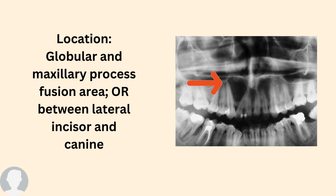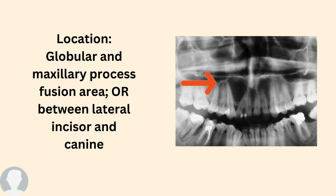From the name globulomaxillary — maxillary equals maxilla — so it only appears in the maxilla, between the lateral incisor and canine, and never appears in the mandible.